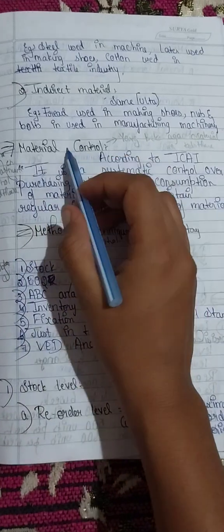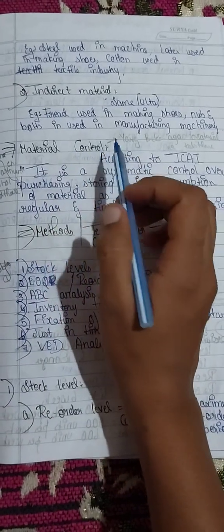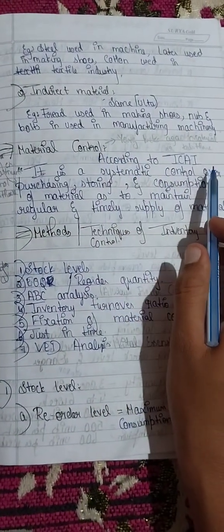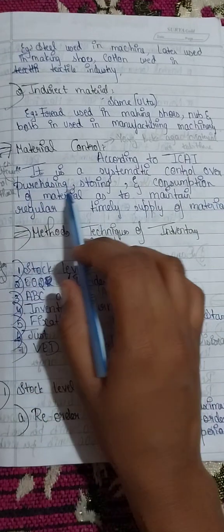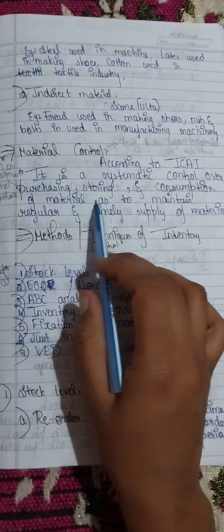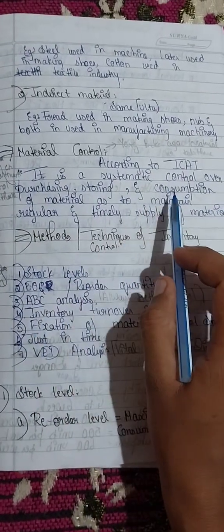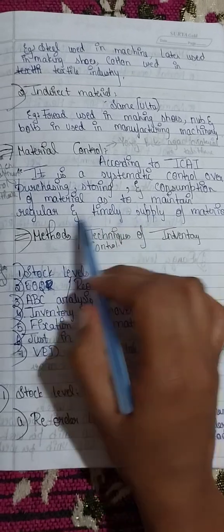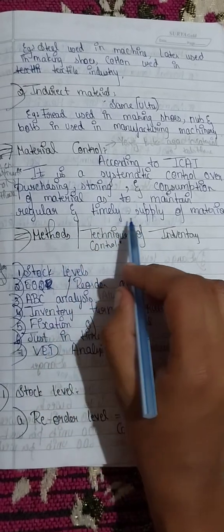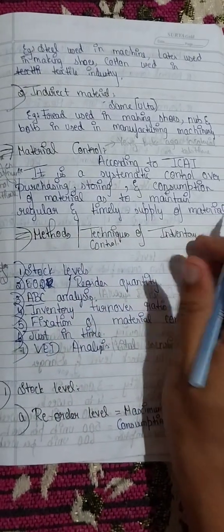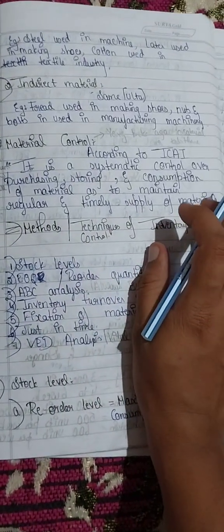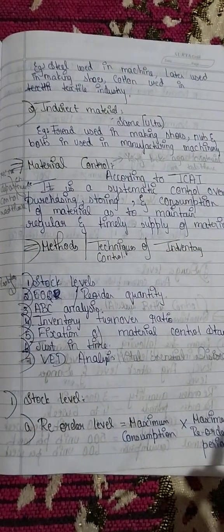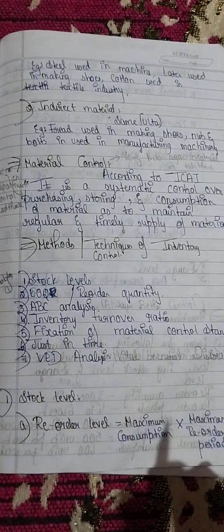The next topic is material control. According to ICAI, it is a systematic control over the purchasing, storing, and consumption of material, so as to maintain a regular and timely supply of material. Material control is used by every manufacturer and company.